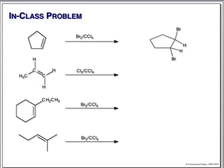We're adding chlorine in carbon tet. We have a simple alkene, so we don't have to worry about stereochemistry, even though we know this is also going to add trans. We will simply put one chlorine on each of the alkene carbons, and it would look something like this.